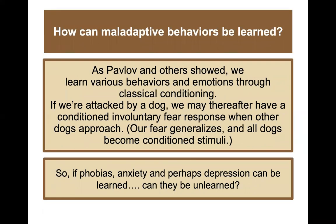How can maladaptive behaviors be learned? As Pavlov and others showed, thinking back to our earlier modules in the learning unit, we learn various behaviors and emotions through classical conditioning. If we're attacked by a dog, we may thereafter have a conditioned involuntary fear response when other dogs approach. Our fear generalizes, and then all dogs become the conditioned stimuli. So if phobias, anxiety, and perhaps even depression can be learned, can they be unlearned?